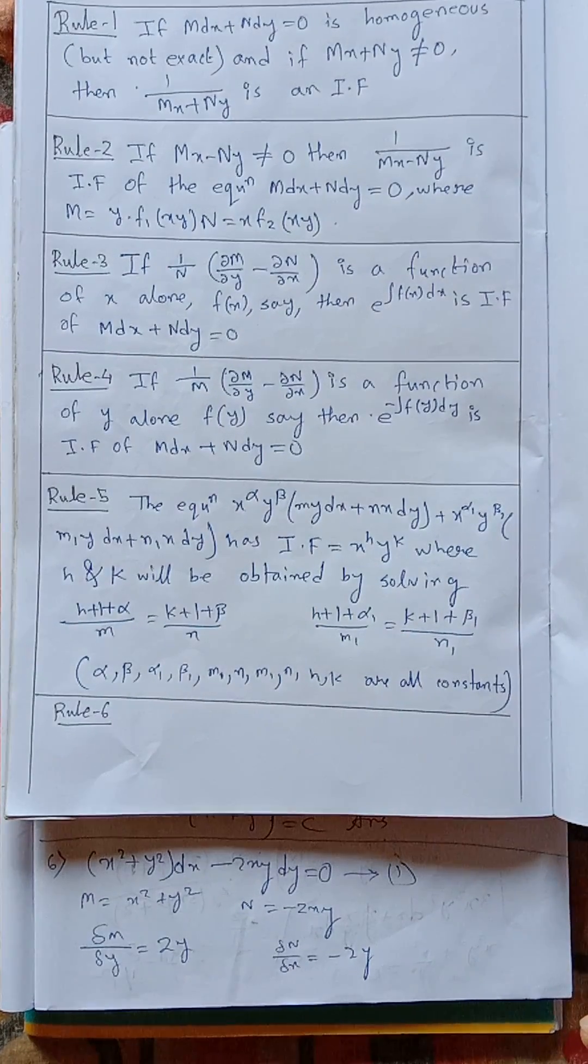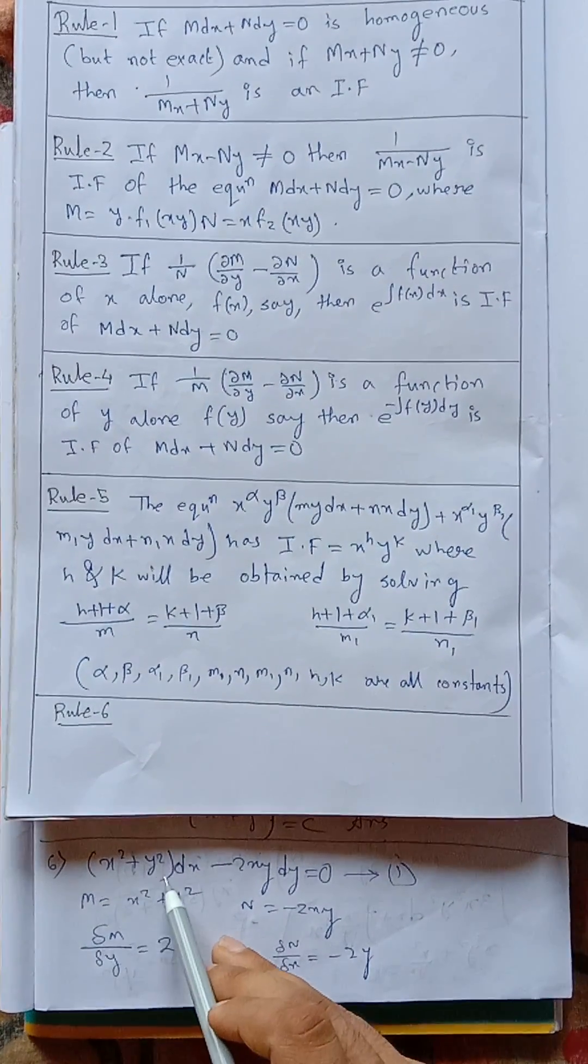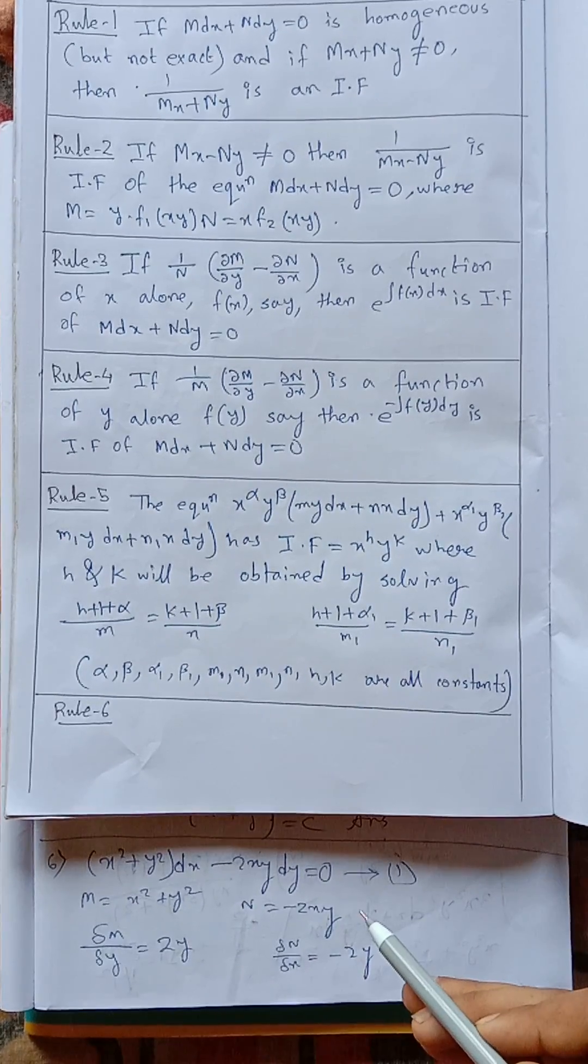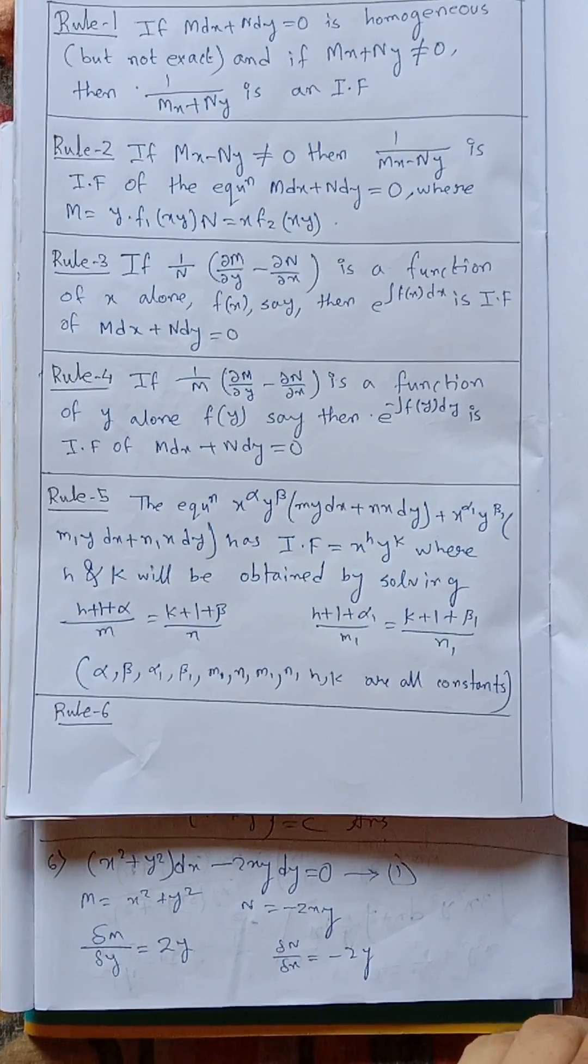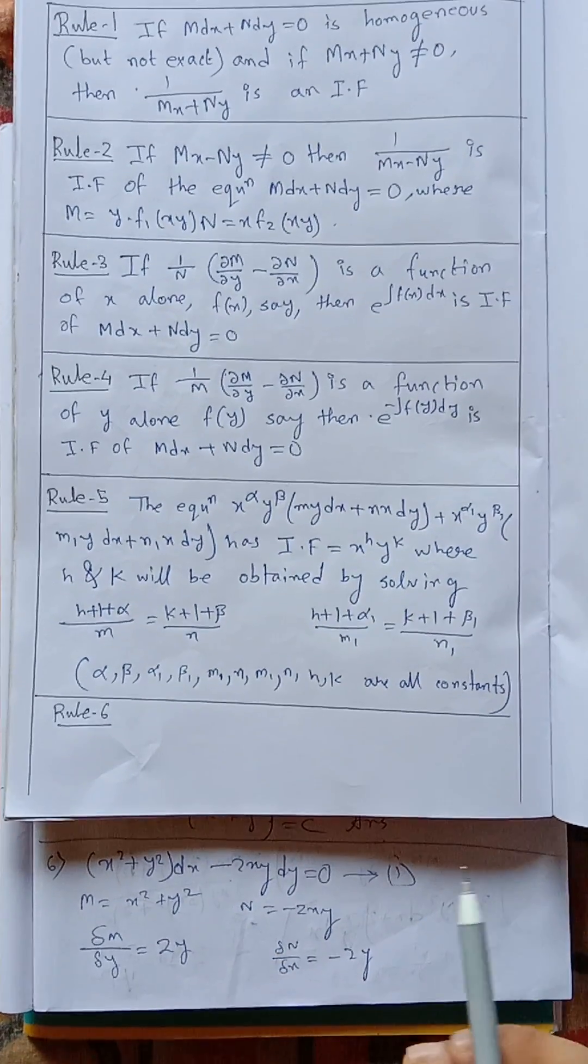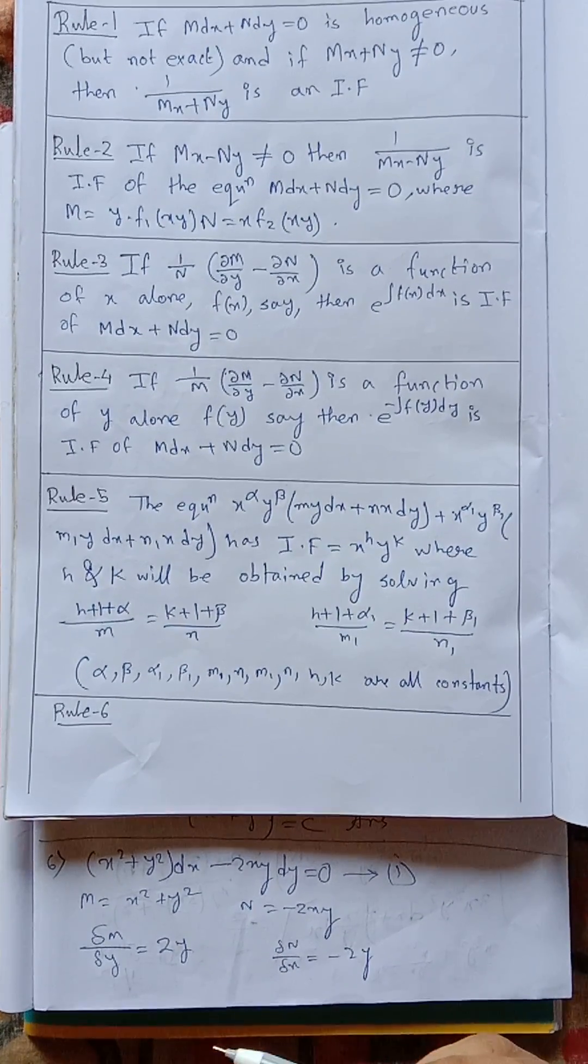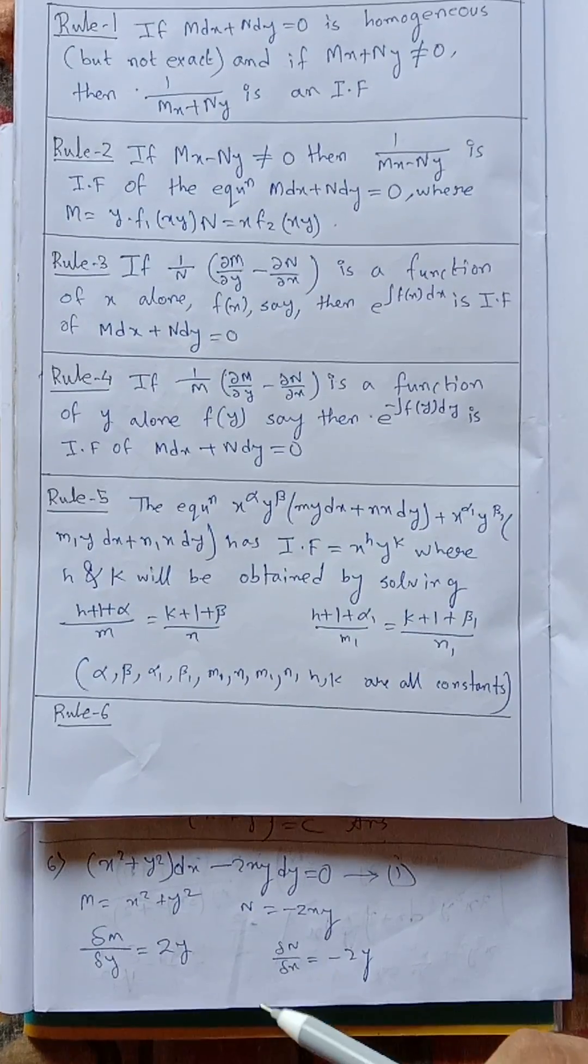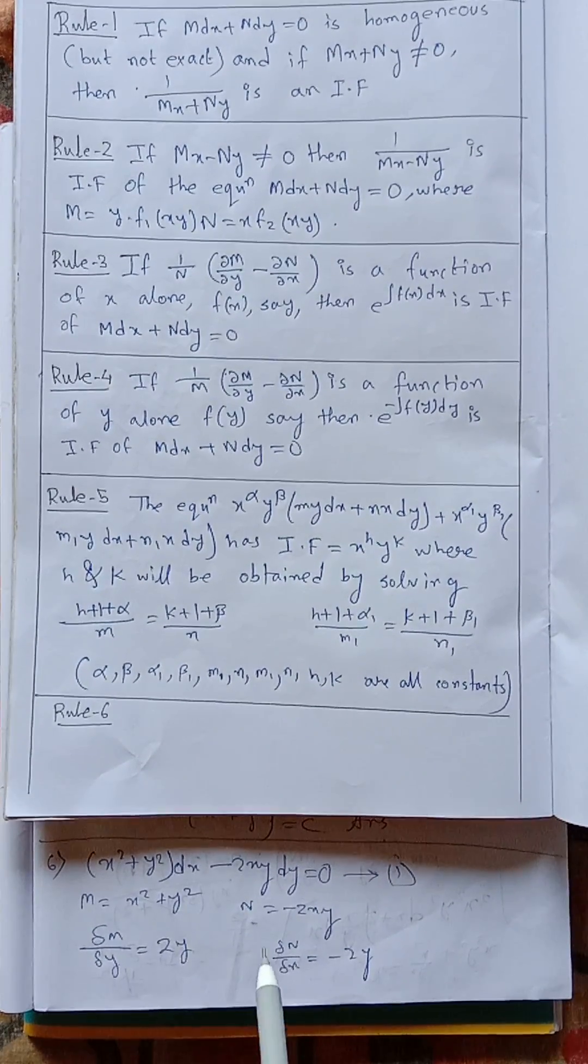Our question is x square plus y square dx minus 2xy dy equals to 0. We know this equation is first order and also first degree, so we know some rules for solving this equation.